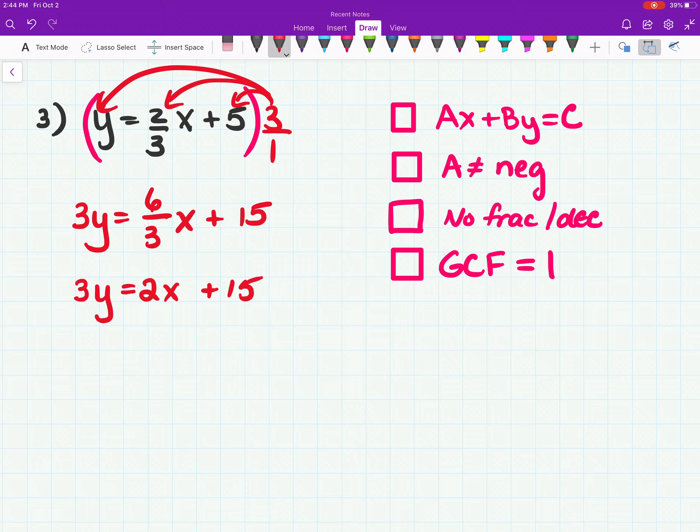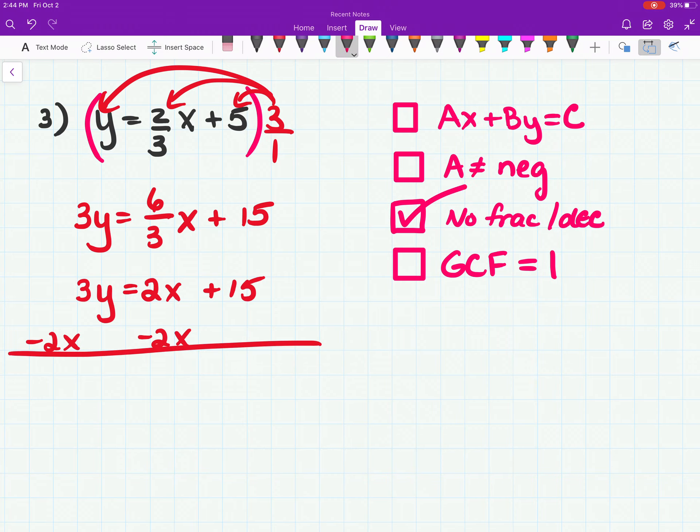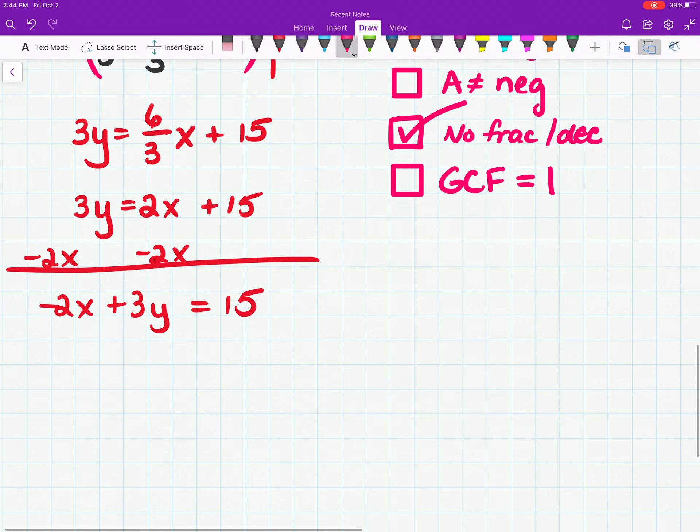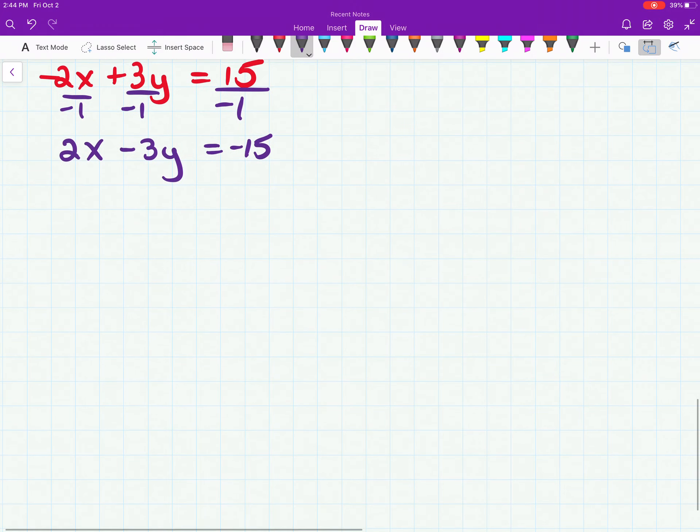Okay, now what? Well, the x is on the wrong side, so let's subtract that. We can check off fractions decimals taken care of. Check. Negative 2x plus 3y equals 15. It's looking good. That looks like ax plus by equals c. Okay, check. Wait. A is negative. Fix it. Divide everything by negative 1. That's not too bad. We just have to remember how to do that. So that's 2x minus 3y equals negative 15. Check that box. And is there anything that goes into 2, 3, and negative 15 besides 1? No. Check that box.